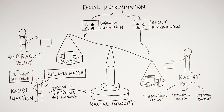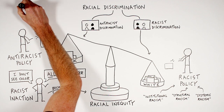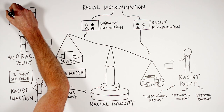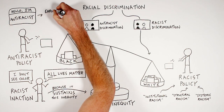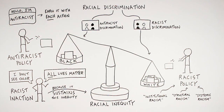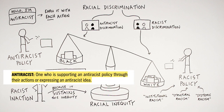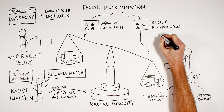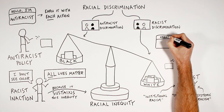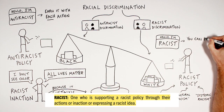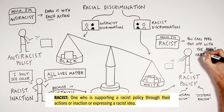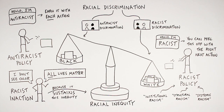Finally, I appreciated how Kendi ended this chapter by thinking about the labels of anti-racist and racist not as something you are stuck with, but more as a name tag that you earn with each action you take. One anti-racist action does not make you an anti-racist for life — you have to keep earning it day after day. Similarly, past racist actions don't have to leave you with a permanent tattoo of 'racist.' You get to pull off that label by making your next action anti-racist.